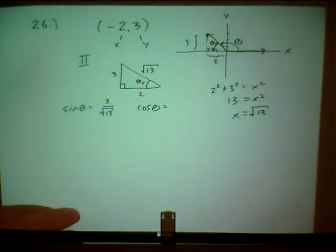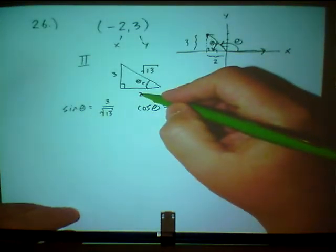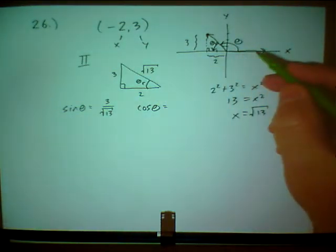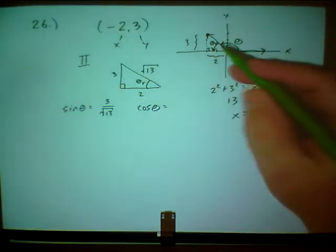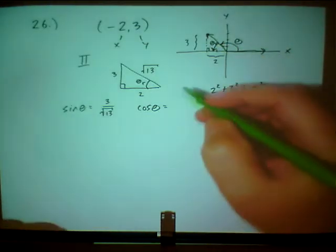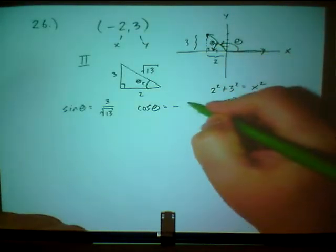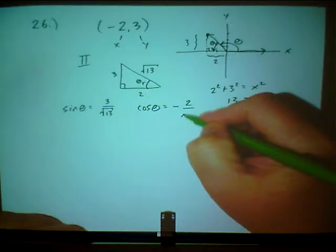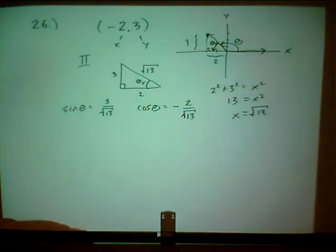Cosine of theta, adjacent over hypotenuse. But you know what? The cosine is going to be negative, because I'm in the second quadrant. So I'll say negative 2 over square root of 13.